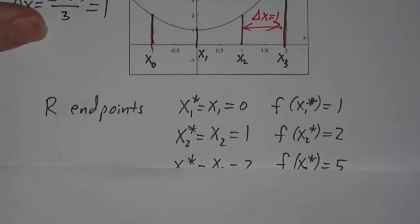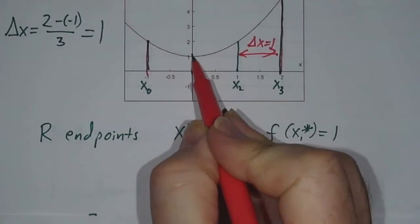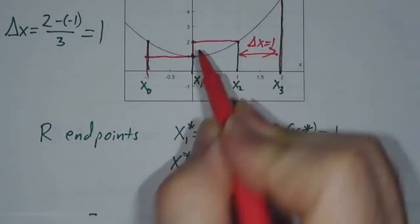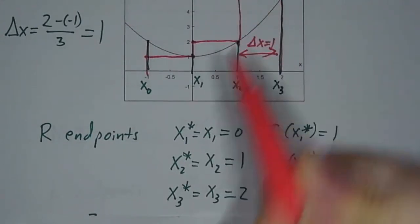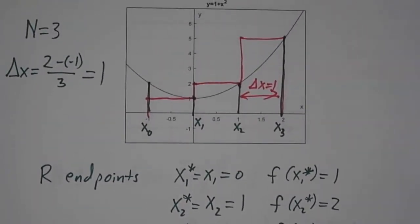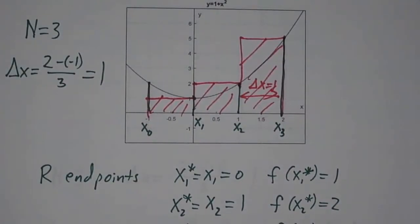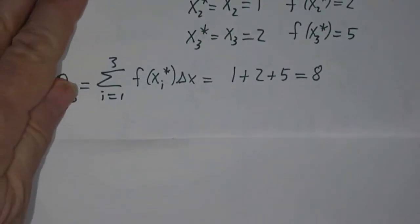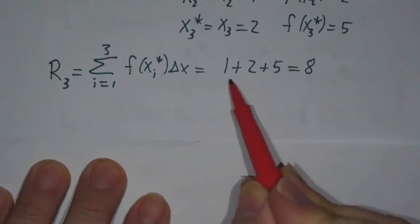In this first pass, we're going to use right endpoints — representing each interval by its right endpoint. How high is the first interval? We use the height of the right endpoint, which is 1. The second interval uses f of x2, which is 2. And the third uses f of x3, which is 5. We figure out the area of each rectangle and add them up as our estimate. The heights are 1, 2, and 5, the widths are 1, so we get 1 plus 2 plus 5, which is 8.